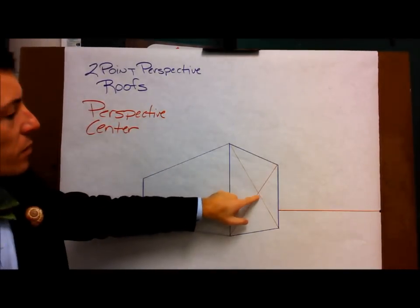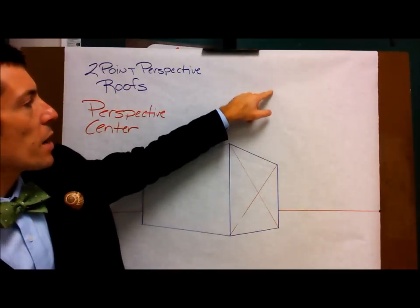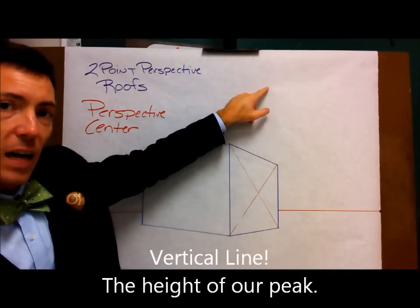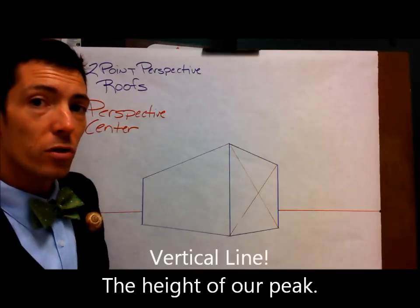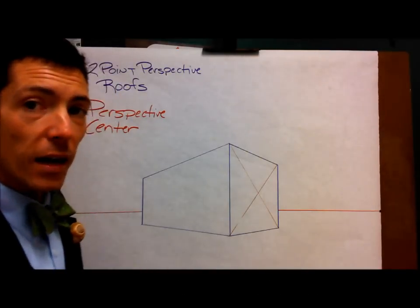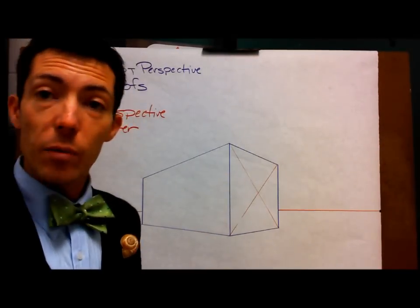From perspective center, I'm going to draw a line straight up in the air. And as high as it gets is where the peak of my roof is going to be. So take 10 seconds, go ahead and draw out your perspective center and pick it up in a moment.